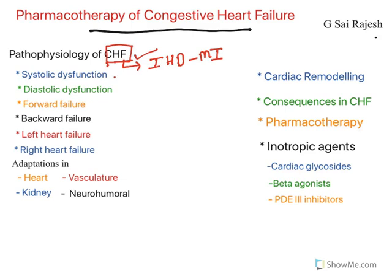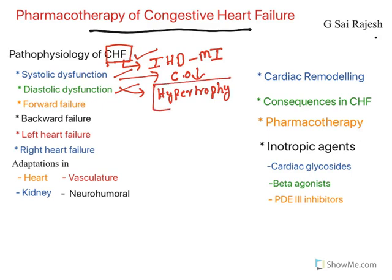Heart failure could be because of systolic dysfunction or diastolic dysfunction. In systolic dysfunction, cardiac output reduces because the heart cannot undergo systole. Diastolic dysfunction is majorly due to cardiac hypertrophy — and here it is a pathological hypertrophy. It results in increased size of the heart. Because of hypertrophy, the heart loses the ability to relax, and that is what is called diastolic dysfunction.